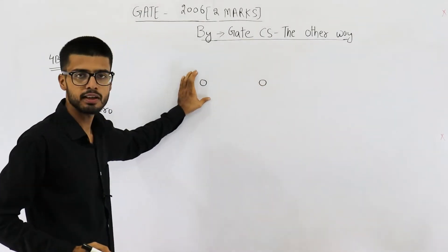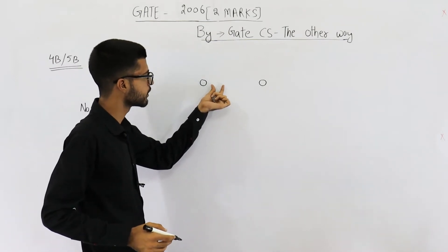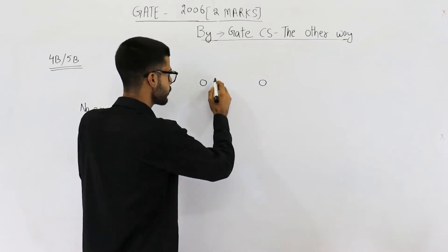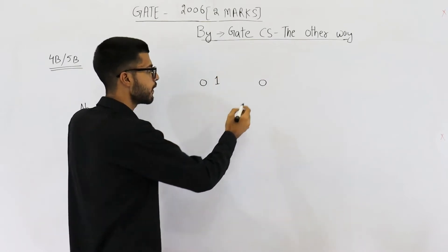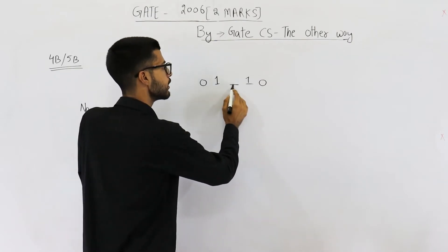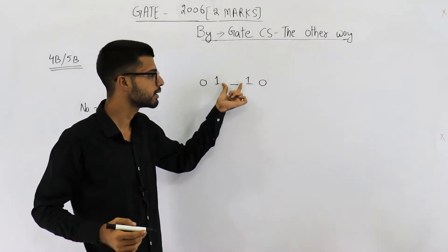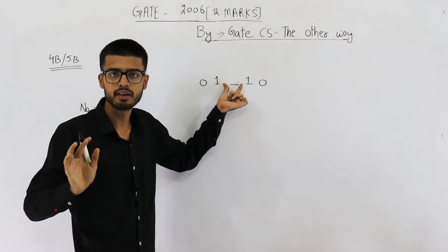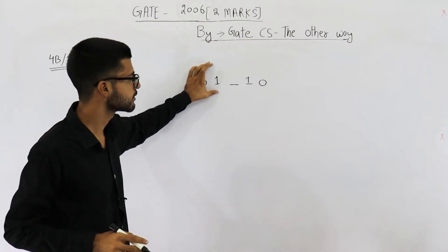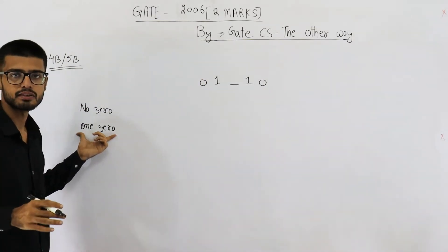Such a case is allowed. You cannot have a zero at the second position because that will give you two leading zeros, so you have to fix that bit to one. Similarly, you have to fix the second-to-last bit to one. Because we have 5-bit codewords, only one bit is left that can be anything — either zero or one. This pattern satisfies the given conditions of at most one leading and at most one trailing zero.